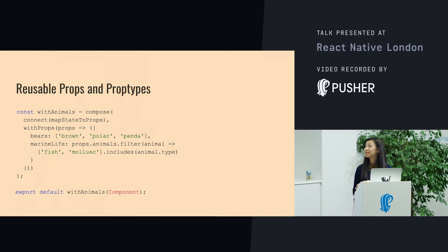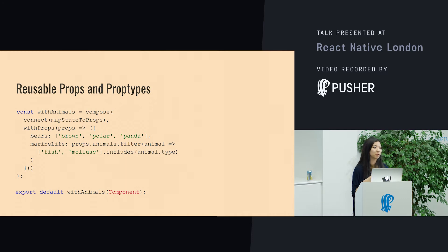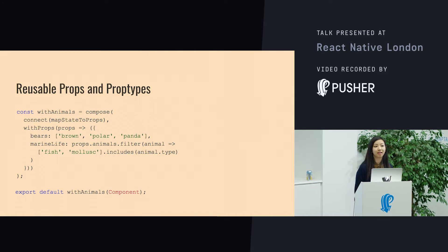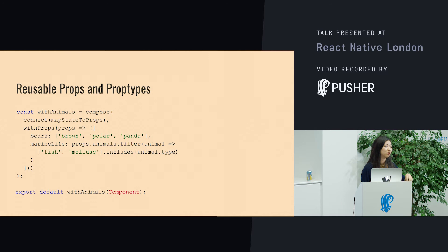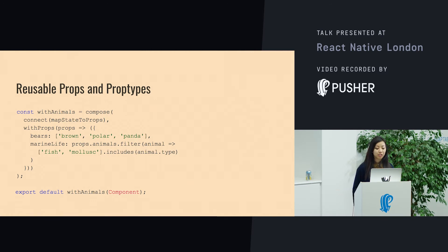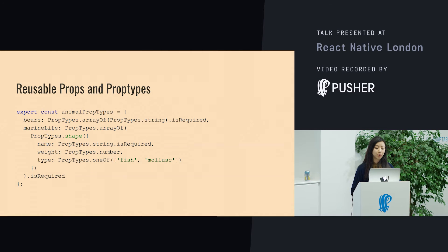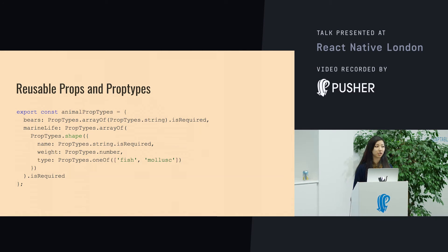We can use higher-order components to create reusable sets of data. If you find you've got a component that needs the same shape of props, quite often you can abstract that and use it multiple times in multiple areas. And if you're going to do that, you can export the prop type shape as well, so you don't have to declare this for multiple components.